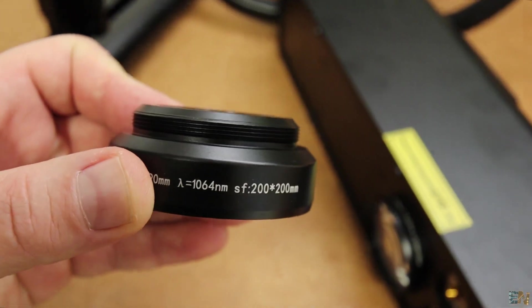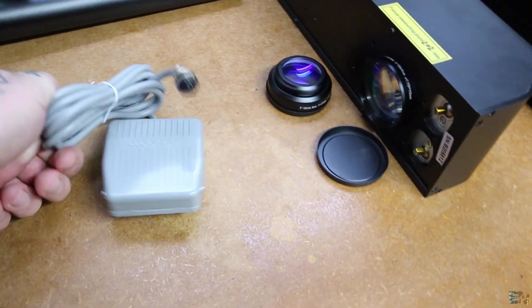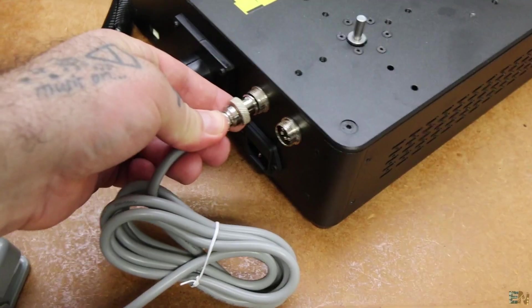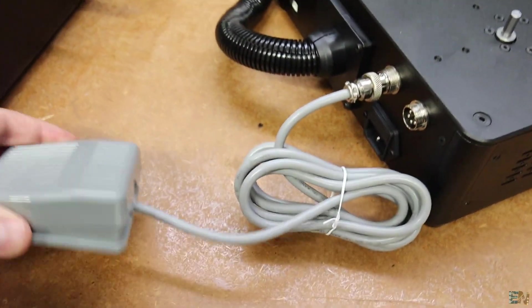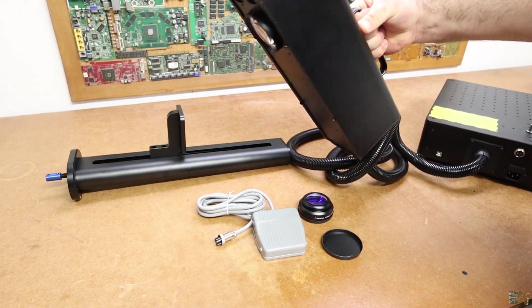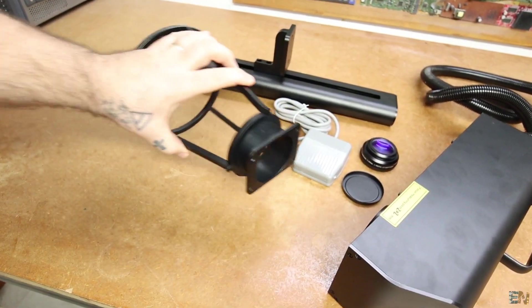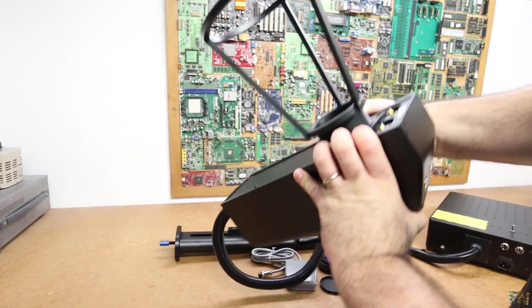For batch engravings you also get this foot pedal so it will be a lot easier to change the object and engrave once again. You can also use the engraver handheld and for that we have this support. You add it on the engraver and use the handle to place it over the material that you want to engrave.